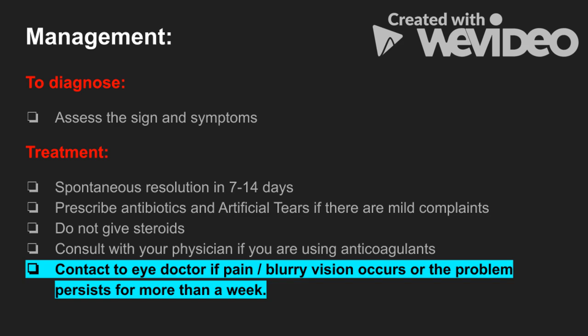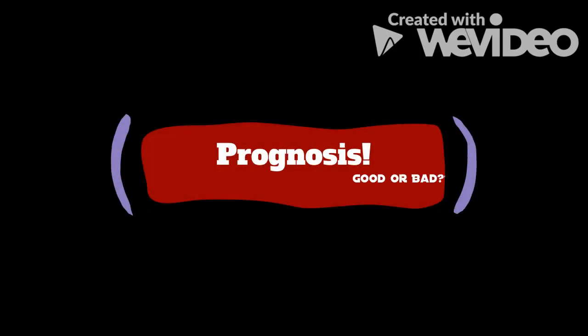Patients should consult with their physicians if they are using anticoagulant medications. If you are having pain or blurred vision, go to your eye doctor immediately, because these are not typical signs of subconjunctival hemorrhage. The prognosis is good — after 7 to 14 days there will be no mark left.